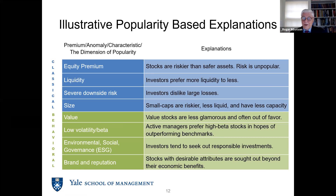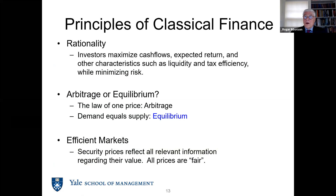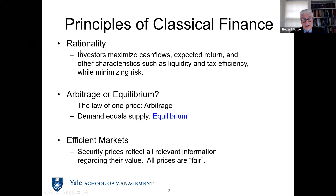The last thing is brand and reputation — that's purely behavioral. People tend to like the brands. In classical finance, the key is rationality. Investors maximize cash flows, they want higher expected returns, but they also want other things like liquidity or tax efficiency, and they want less risk. The key thing being we're rational about these. The model of classical finance either assumes arbitrage or equilibrium, and we're talking about equilibrium here.